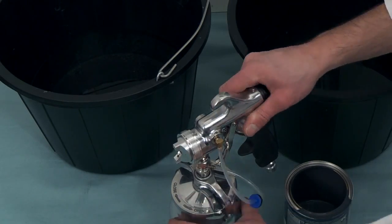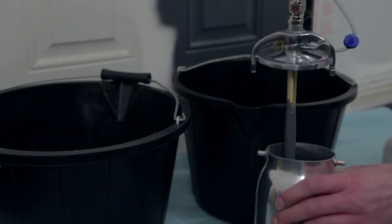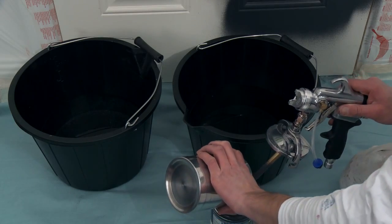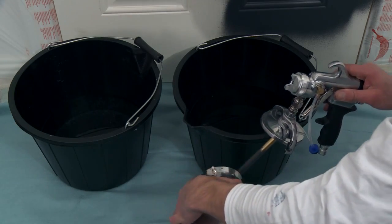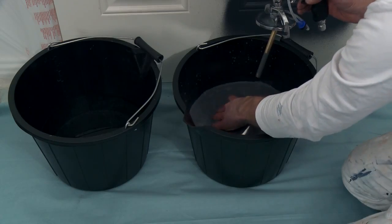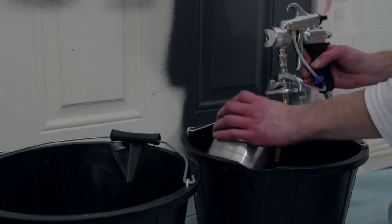The first step in the cleaning process is to slowly release the can lever on the cup lid and open. Empty the cup of any material not used. Rinse the cup out and clean off any residue of paint that remains in the cup. Now rinse the pipe off.